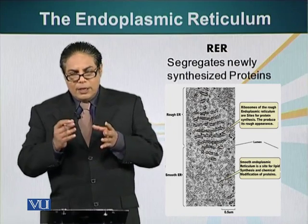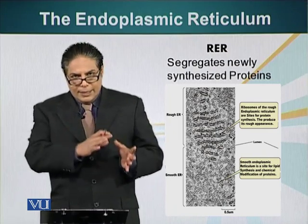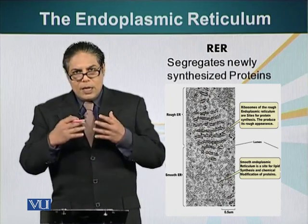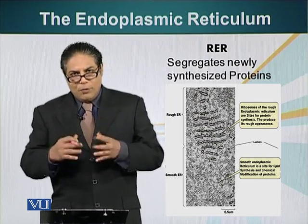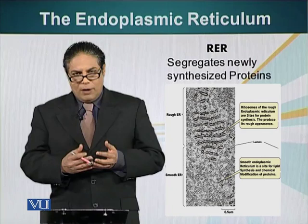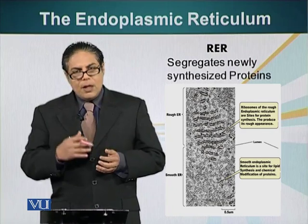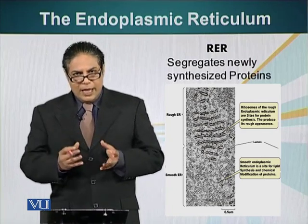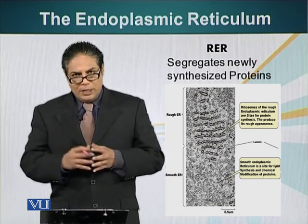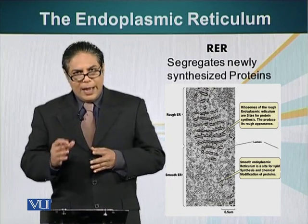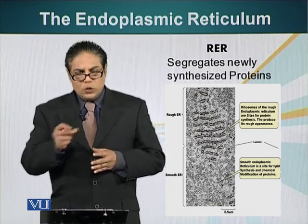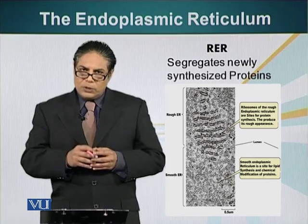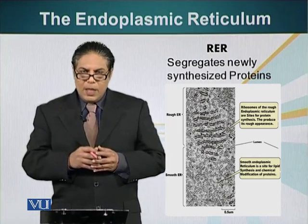Proteins are injected into the endoplasmic reticulum because these proteins have to be first modified. Rough endoplasmic reticulum has special enzymes that can modify these proteins by adding sugar molecules to them. This process is called glycosylation.